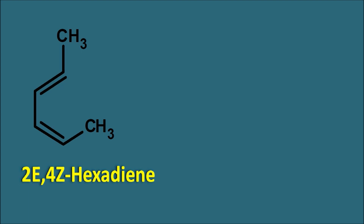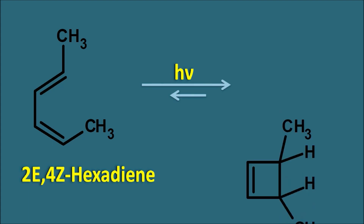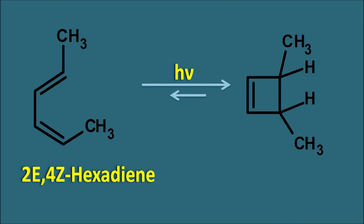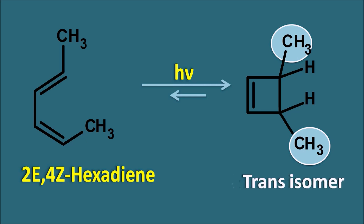Now let us take the same compound — 2E4Z hexadiene — but use photo energy. Then the reactant gives a product where one methyl group is on one side and another methyl group is on the other side. So this is the trans isomer. You can see that the same reactant gives the cis isomer when we use thermal energy, but the trans isomer when we use photo energy.